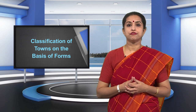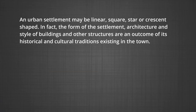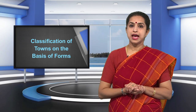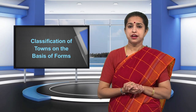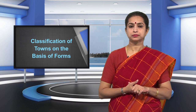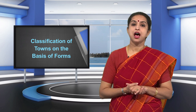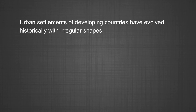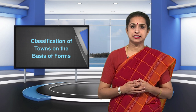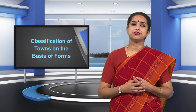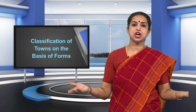Classification of towns on the basis of forms: An urban settlement may be linear, square, star-shaped, or crescent-shaped. The form of the settlement, architecture, and style of buildings are an outcome of its historical and cultural traditions. Towns and cities of developed and developing countries reflect marked differences in planning and development. While most cities in developed countries are planned, urban settlements of developing countries have evolved historically with irregular shapes. For example, Chandigarh and Canberra are planned cities, while smaller towns in India have evolved historically from walled cities to large urban sprawls.